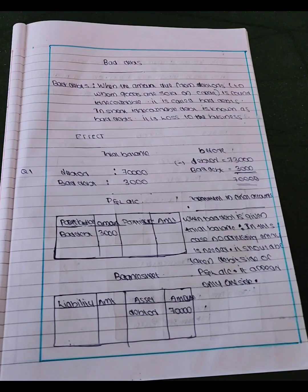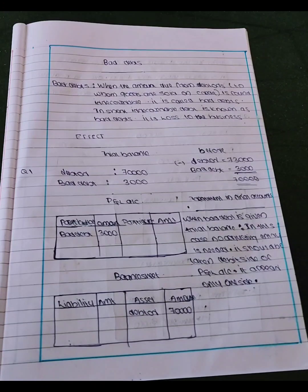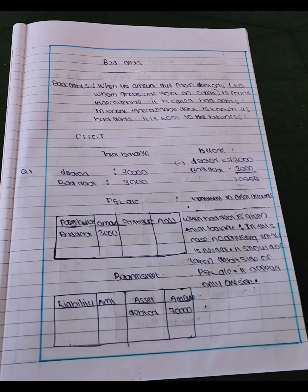When the amount due from debtors to whom goods are sold on credit is found irrecoverable, it is called bad debt. In short, the irrecoverable debt is also known as bad debt.